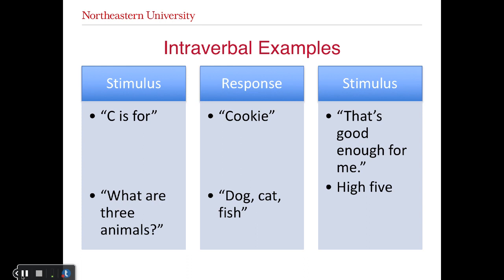Looking at the intraverbal examples: if you say 'C is for,' the student says 'cookie,' and you say 'that's good enough for me' — continuing the song. Notice that 'C is for' and 'cookie' do not share any point-to-point correspondence. They are formally similar in that both were vocal. In the next example, 'what are three animals?' evoked 'dog, cat, fish,' followed by a high five as a generalized conditioned reinforcer.